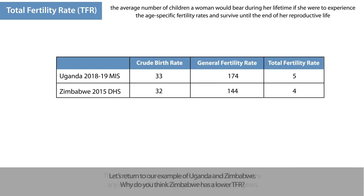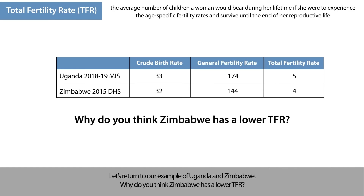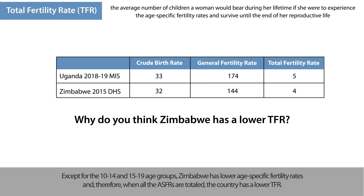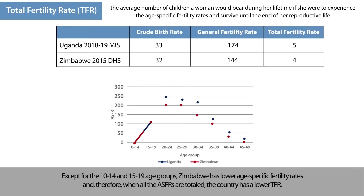Let's return to our example of Uganda and Zimbabwe. Why do you think Zimbabwe has a lower TFR? Zimbabwe has lower age-specific fertility rates, and therefore, when all the ASFRs are totaled, the country has a lower TFR.